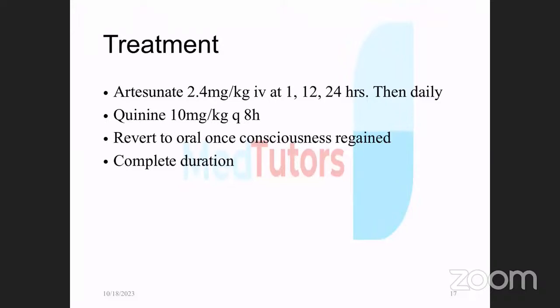Artesunate is given at 2.4 mg/kg at zero, 12, and 24 hours. A loading dose of 20 mg/kg is given before maintaining with 10 mg/kg in glucose-containing fluid run over four hours. Once the patient is conscious and able to tolerate oral medication, switch to oral antimalarials.